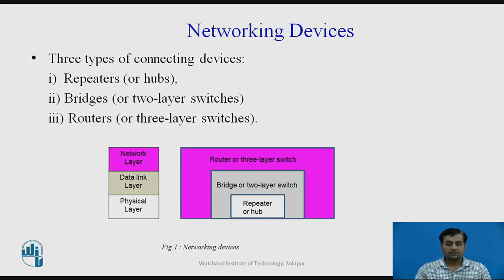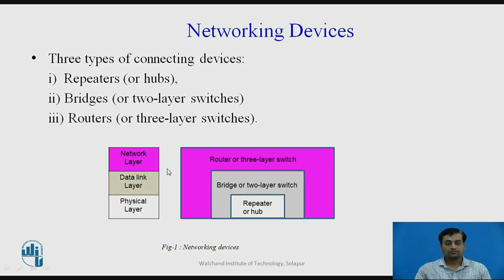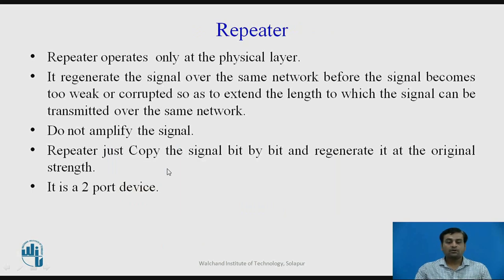In figure one, you can see that repeaters work at the physical layer of the OSI model, while bridges or two-layer switches work at the first two layers — physical and data link. Routers or three-layer switches work at all three levels: physical, data link, and network layer.